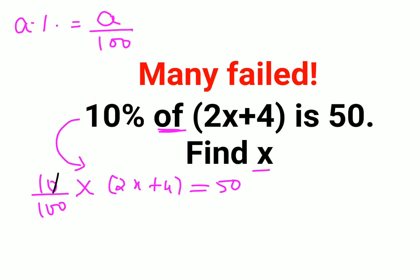Now if you see, things are cancelling. So now you have 2x plus 4 upon 10 equals to 50.